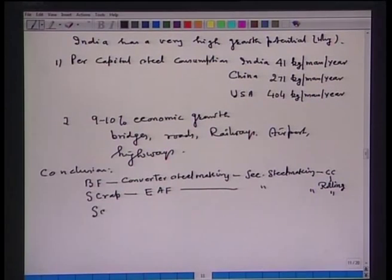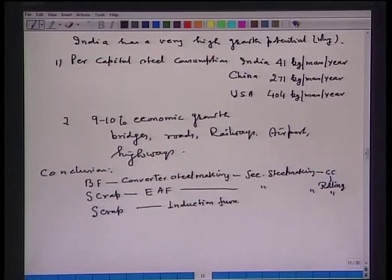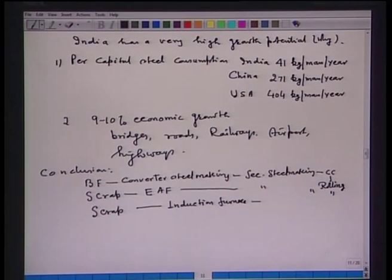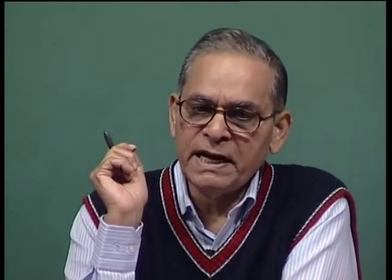Another route uses scrap in the induction furnace, where the manufacturer may sell ingots directly or proceed through secondary steelmaking, continuous casting, and rolling. In conclusion, modern steelmaking comprises either the blast furnace-converter route or the scrap-electric arc furnace route, and the course will concentrate on converter steelmaking and electric arc furnace steelmaking.